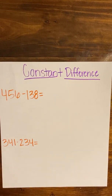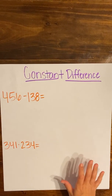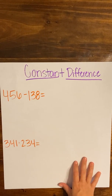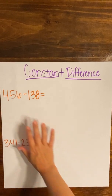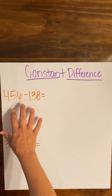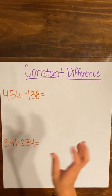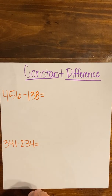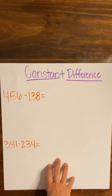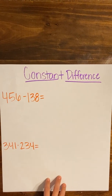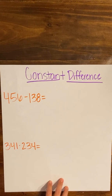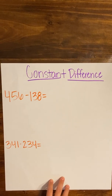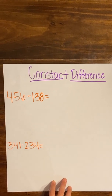We're going to show examples of both, but remember when we're choosing what strategy to use, we're basing it off of the numbers we're looking at. You want to choose the best strategy for the numbers given in your problem. With the constant difference strategy, you'll want to use this when your numbers are going to require regrouping and you want to make them easier to solve and avoid that regrouping.